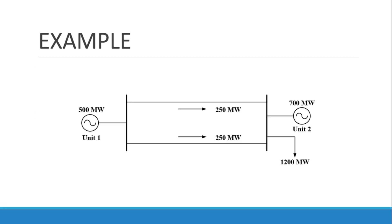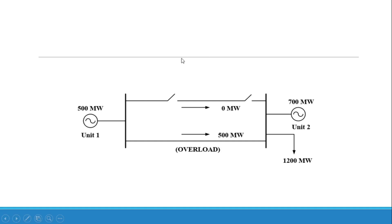Let me explain power system security assessment with an example. We have two generator units — unit 1 and unit 2 — supplying a load of 1200 megawatts, with a double transmission line where both lines are each transmitting about 250 megawatts. If an outage occurs on one line, the other line has to carry the full 500 megawatts from unit 1 to the load, causing overloading. In the worst case, this can cause that transmission line to trip and result in islanding.